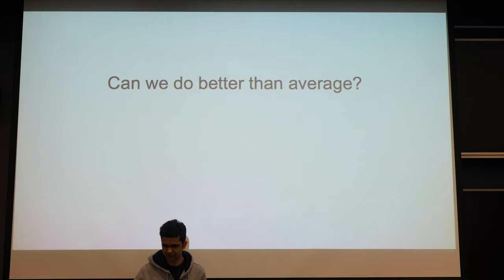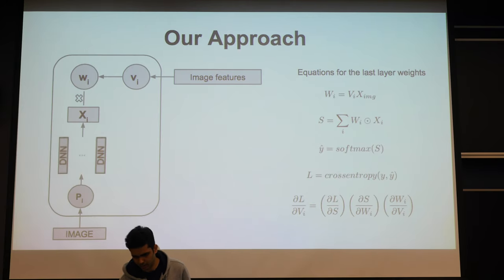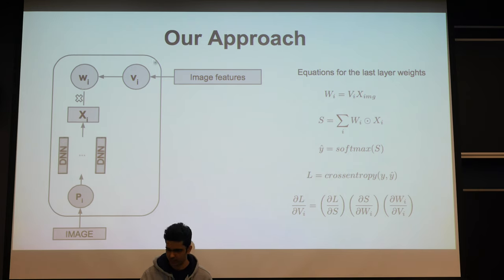To address this particular problem, we work with this approach, wherein we are learning weights for each test image. Here you see an MCDNN, which is working on a pre-processed dataset, say P1. Xi is the average output from that MCDNN. And we are learning weights Wi for each test image using a hyper variable over here called Vi.